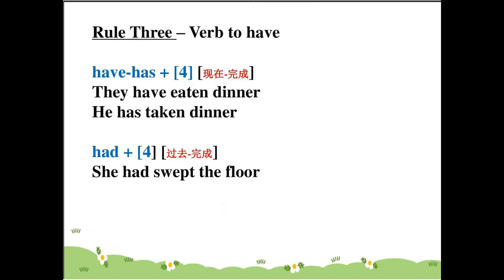Rule number three: work 'to have' — have, has, had. Has is the singular form: he/she has. For example: they have eaten dinner, he has taken dinner.